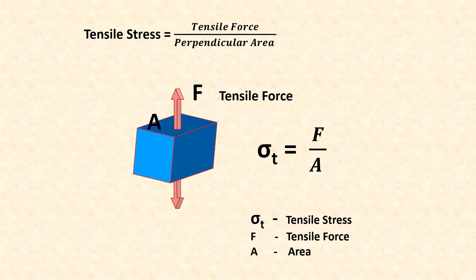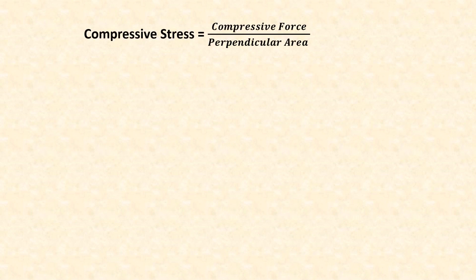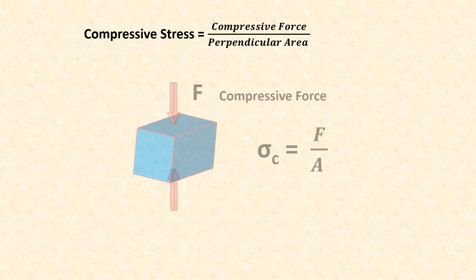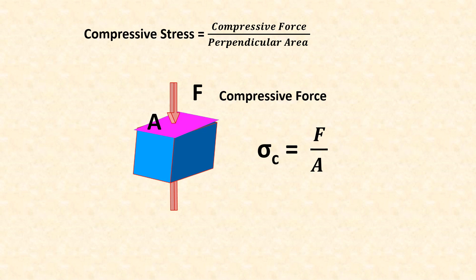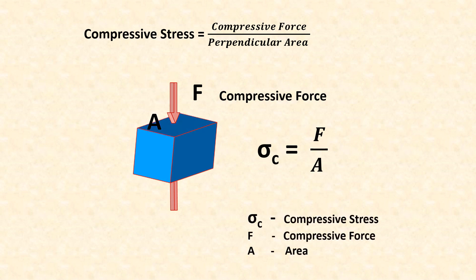Tensile stress notation is sigma-t. Compressive stress is equal to compressive force over perpendicular area. Compressive stress notation is generally sigma-c.